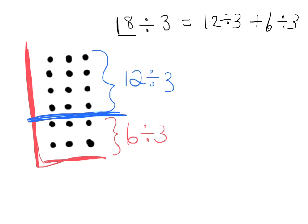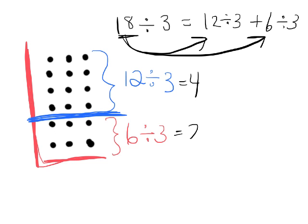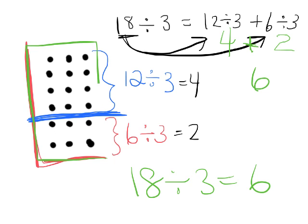And the idea being this 18 is related because 6 plus 12 is 18. And then we can see that 12 divided by 3 is equal to 4 because we can see four rows, and 6 divided by 3 is equal to 2 because we see 2 rows. So really, 12 divided by 3 is 4, 6 divided by 3 is 2. Adding those together we get 6, and sure enough, 18 divided by 3 is equal to 6, and we can see that in our array—there are 6 rows of 3.